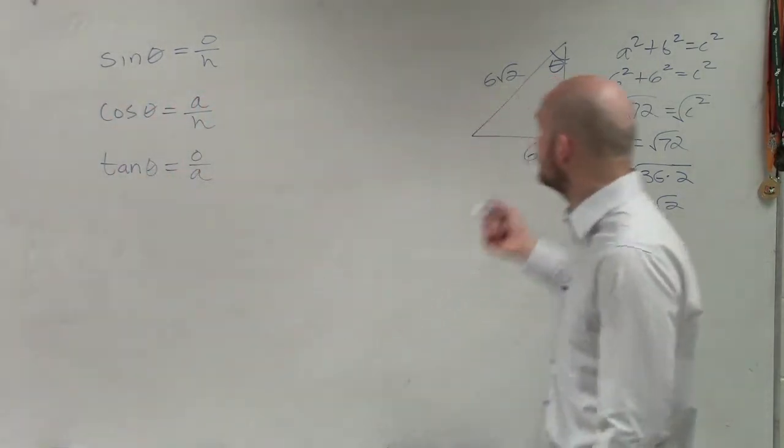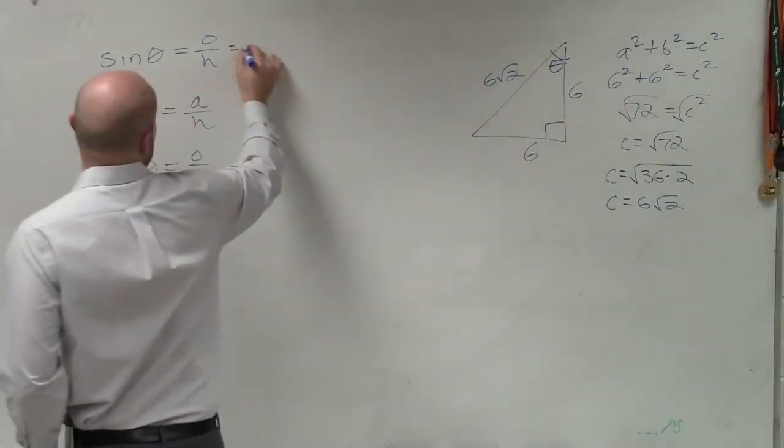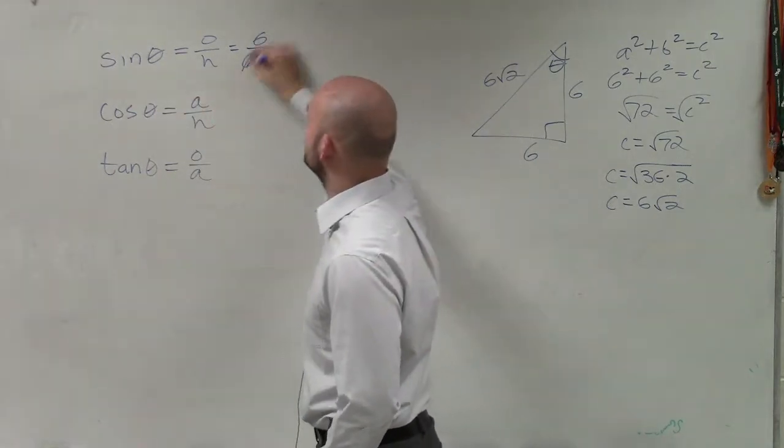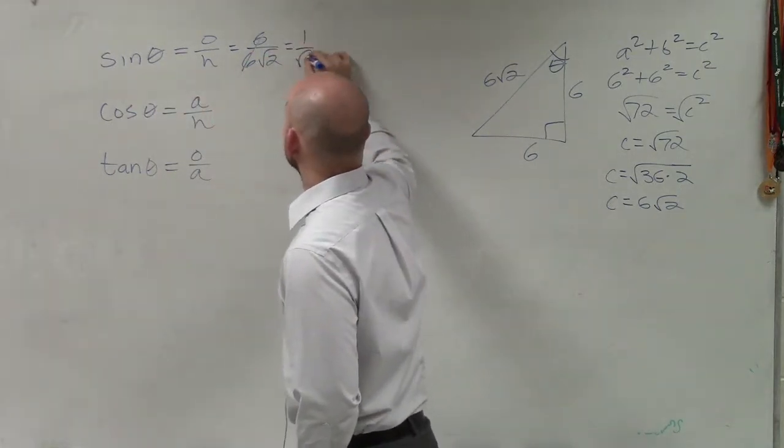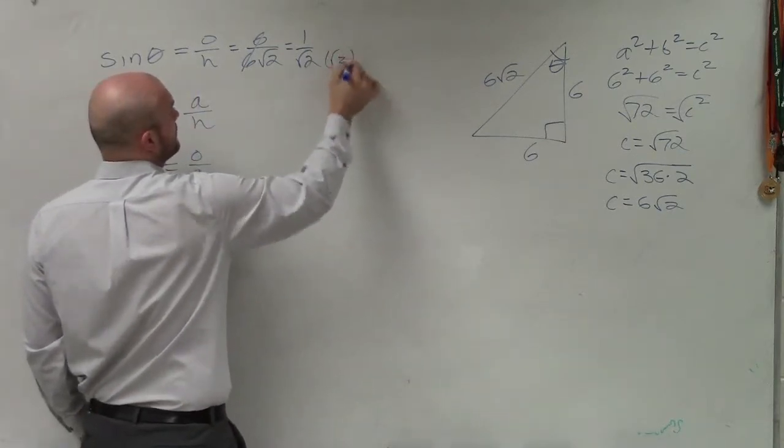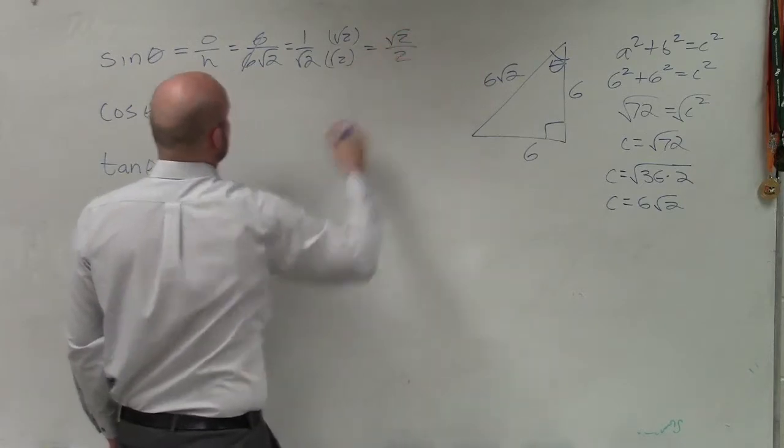So now we're just going to take from theta, opposite over hypotenuse. 6 over 6 square root of 2. Well, obviously you guys can see the 6's divide to 1. So you're left with 1 over the square root of 2. Then you rationalize the denominator. Your final answer is square root of 2 over 2.